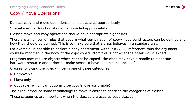Copy and move operations: deleted copy and move operations shall be declared appropriately, special member functions should be provided appropriately, and class move and copy operations shall have appropriate signatures. The actual requirements depend on what we want our classes to do, and there are a number of rules governing the combinations of copy and move constructors that can be defined to make sure classes behave in a standard, predictable way. For example, it's possible to declare a copy constructor without a const reference — just a plain reference — so the argument could be modified in the body of the copy constructor. This isn't really what anyone would expect when copying something; that's why the signature should be a const reference, so we know from the caller's point of view that the object can't be modified.